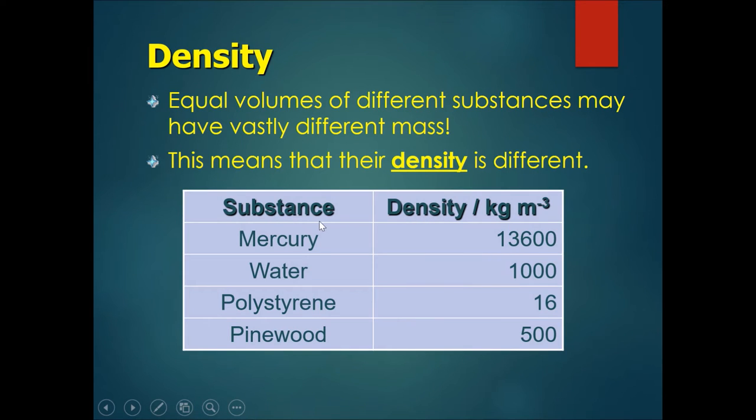So let's take a look at some substances. Mercury is extremely dense. It has 13,600 kilograms of matter inside one meter cube. Water has 1,000 kilograms of matter inside one meter cube.